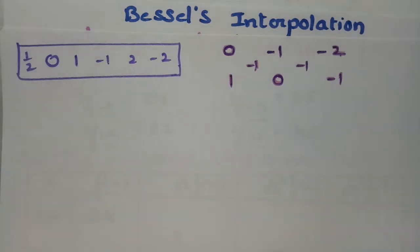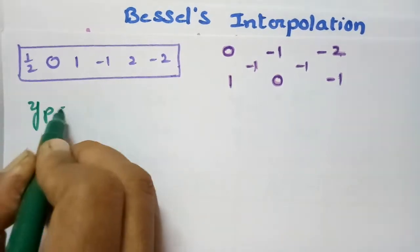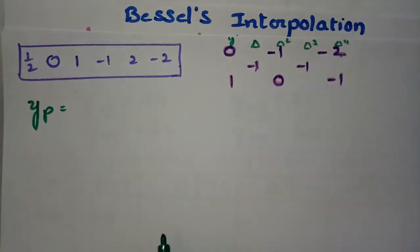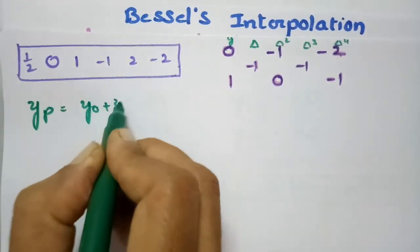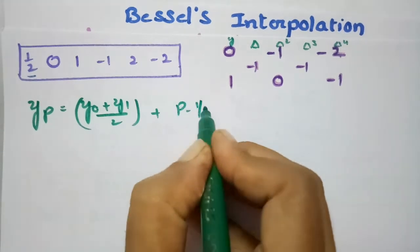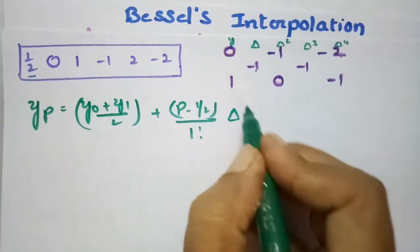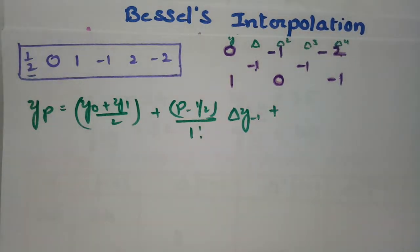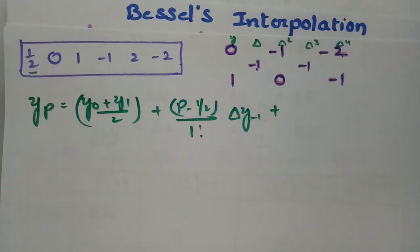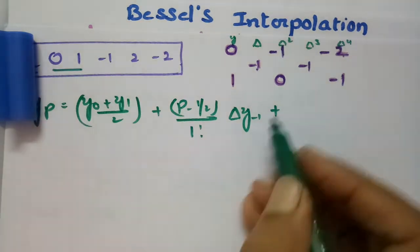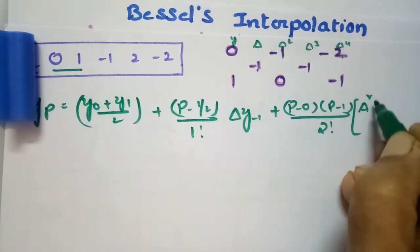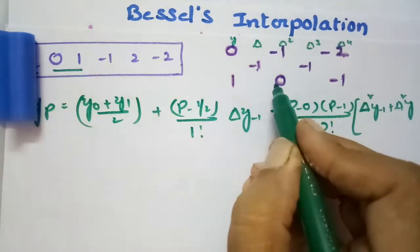Now I will frame the Bessel's interpolation formula. yₚ equals (y₀ + y₁)/2, plus (p minus 1/2) divided by 1 factorial, times Δy₋₁, plus p(p minus 1) divided by 2 factorial, times the second difference Δ²y₁/₂.